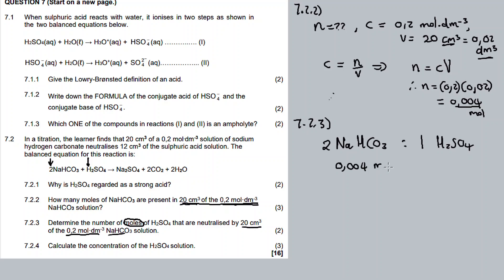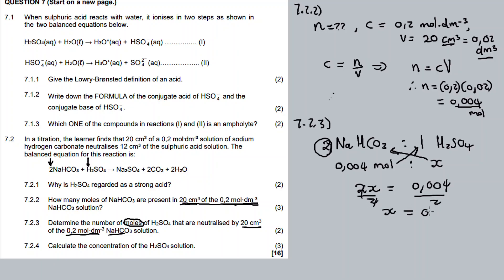With 0.004 moles of sodium hydrogen carbonate reacting with a certain number of moles of sulfuric acid, we cross multiply: x times 2 equals 0.004 times 1, which is 0.004. Divide by 2. X equals 0.002 moles of sulfuric acid. These are the number of moles neutralized by this amount of sodium hydrogen carbonate.